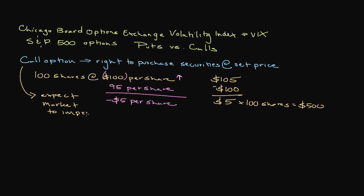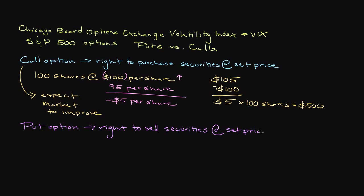A put option is another type of options contract that works in a very similar fashion to a call. However, instead of having the option to purchase a security, a put provides the owner with the right to sell a specified number of shares at a specific price within a certain period of time. Think of a put option as like insurance on your home or vehicle — it's meant to protect you in the case that your asset decreases in value significantly. If that does happen, you have a contract that gives you the right to sell at a higher than market value.